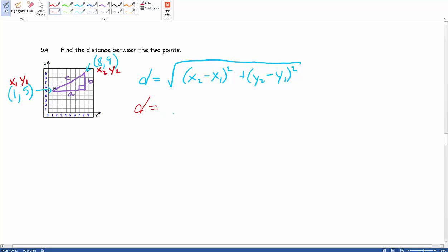So our d equals the square root of: our x2 is 8 minus our x1 is 1, squared...